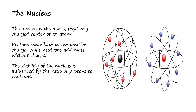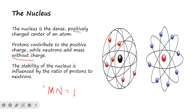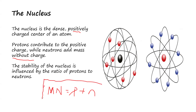So the nucleus is dense, which is a positively charged center of an atom. The protons contribute the positive charge of the nucleus, while the neutrons add mass without charge. So the neutrons don't have any charge at all, but they actually add to the mass of the element. To get the mass of the element, we use a formula which says: mass number is equal to proton number plus neutron number. So mass number equals proton plus neutron, and it is the neutrons number and the protons number that determine the mass of the element.